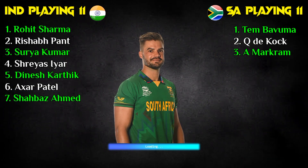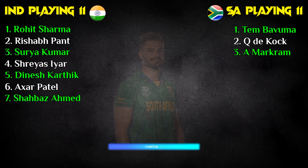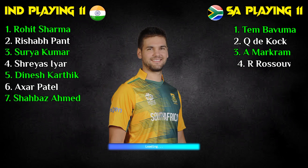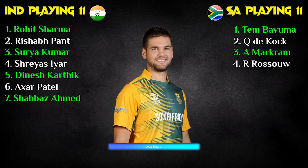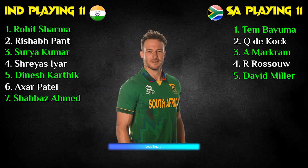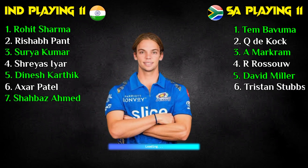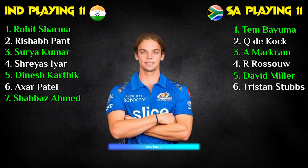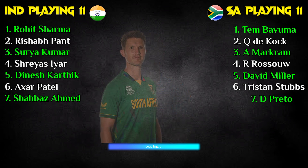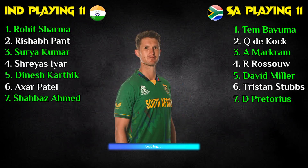Number 3 Aiden Markram, batting all-rounder. Number 4 Reeza Hendricks, left-handed batsman. Number 5 David Miller, left-handed batsman. Number 6 Tristan Stubbs, right-handed batsman. Number 7 Dwaine Pretorius, all-rounder.